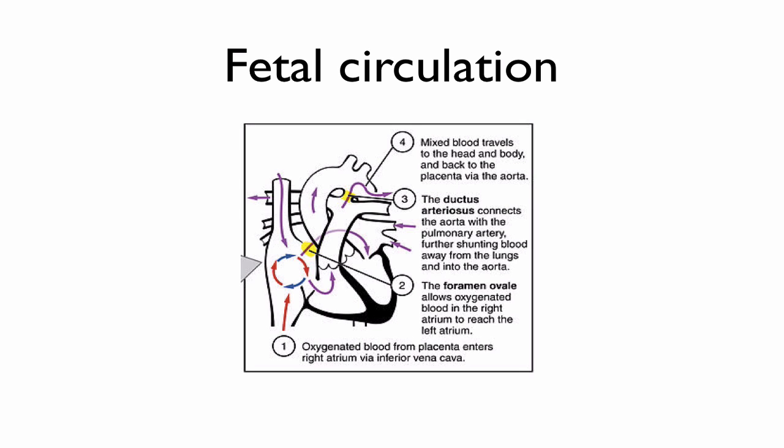The blood enters the IVC, then goes into the right atrium, and crosses the foramen ovale into the left atrium. In fetal circulation, the right and left atria are at equal pressure, which is important as it allows time for the right ventricle to develop fully, and it shunts most of the blood away from the pulmonary artery.